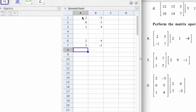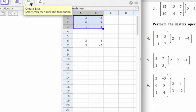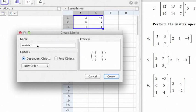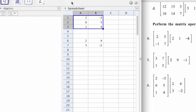With two matrices in the spreadsheet mode, I highlight my items in the first matrix and I do this little dropdown and say create matrix. I'm going to name it A.